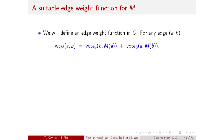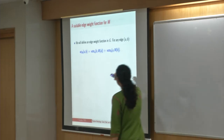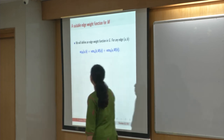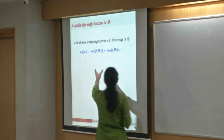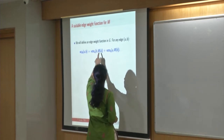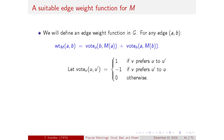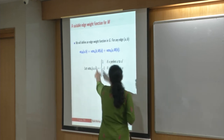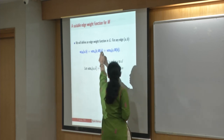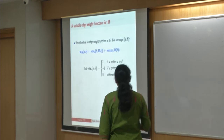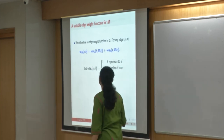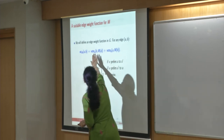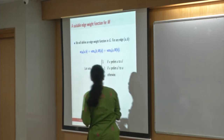We formulate a linear program with a suitable edge weight function. For any edge AB, the weight is the sum of votes of the endpoints for each other versus their respective assignments in M: +1 if a vertex prefers that neighbor to its partner in M, -1 if it prefers its partner in M, and 0 if the neighbor equals its partner in M. An edge weight of +2 means exactly that the edge blocks M.